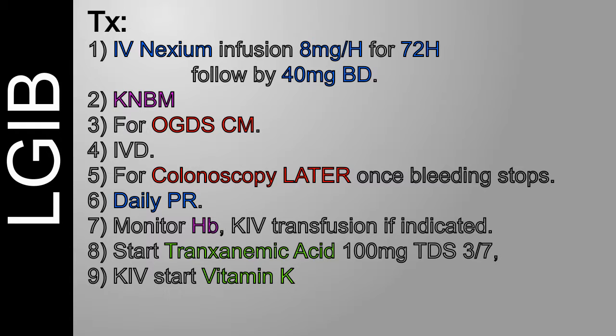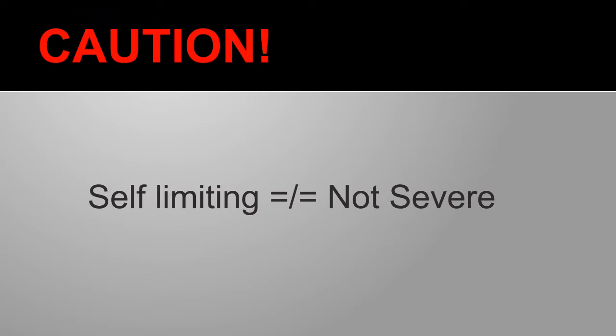LGIB is a self-limiting disease. Unlike in UGIB where OGD can be therapeutic, colonoscopy has no therapeutic role in LGIB — only a diagnostic one. We might do an OGD the coming morning to rule out UGIB, and colonoscopy later once the bleeding stops — you can't see anything with a pool of blood. So: NBM, OGD, IV esomeprazole infusion, IV drip, daily PR, colonoscopy later once bleeding stops, IV tranexamic acid, sometimes vitamin K, monitor HB, and transfuse if indicated.